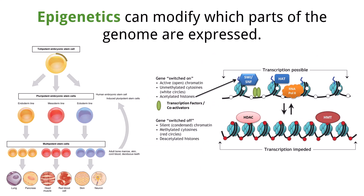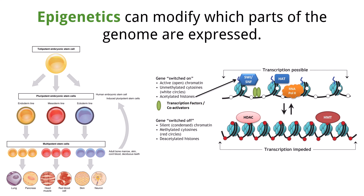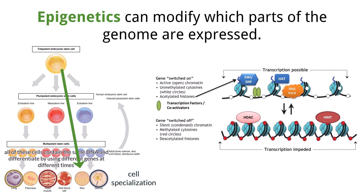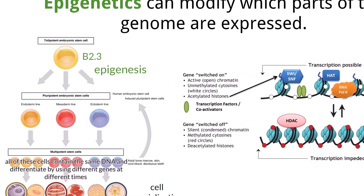During embryonic development, the cells go through a process of differentiation where certain genes are expressed while others are silenced. This allows each cell to specialize. Some cells will become muscle cells and will specialize to contract and relax, while nerve cells will specialize in sending impulses. While these cells contain all of the genetic information of the organism — its genome — only a small part of that genome is active. The formation of organs and specialized tissue from undifferentiated stem cells is called epigenesis.